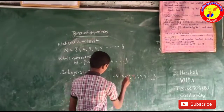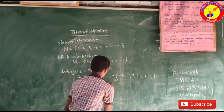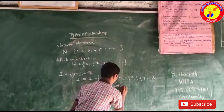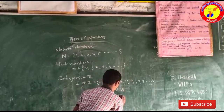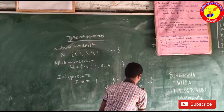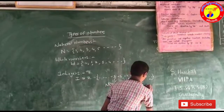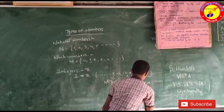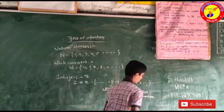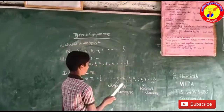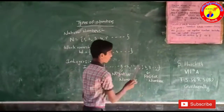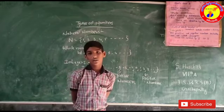The left side numbers are negative numbers and the right side numbers are positive numbers. 0 is neither positive nor negative. These are integers.